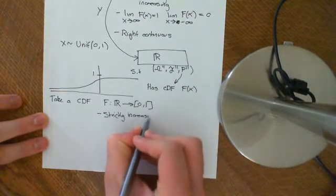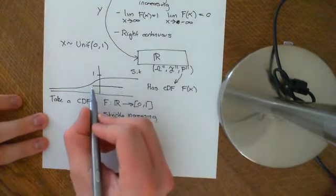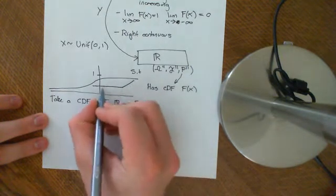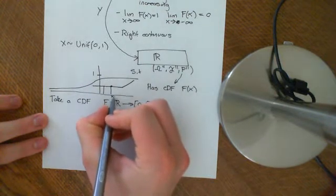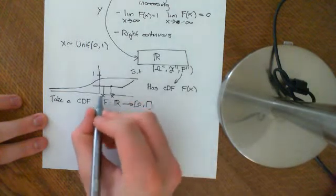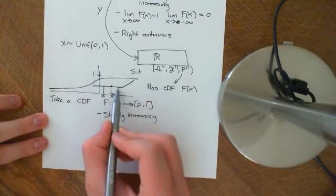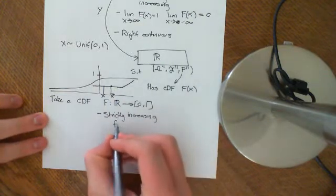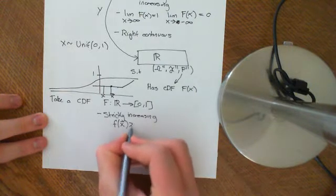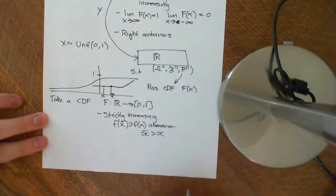Saying strictly increasing makes everything a lot easier to deal with. If it's monotonically increasing you can end up with flat bits — segments that stay level. Whereas if it's strictly increasing, it always has to increase: if x̄ is greater than x, then F(x̄) has to be strictly greater than F(x). With monotone increasing it just has to be greater than or equal to F(x). So strictly increasing is the stronger statement.